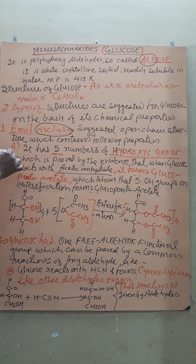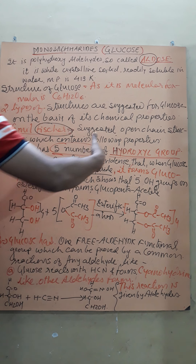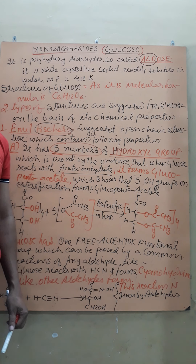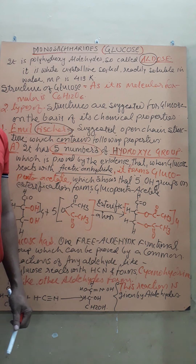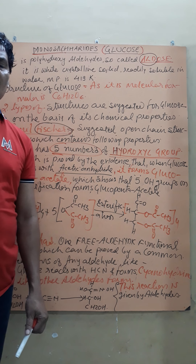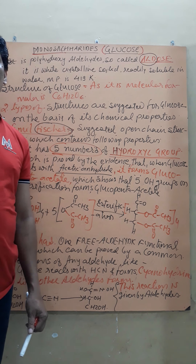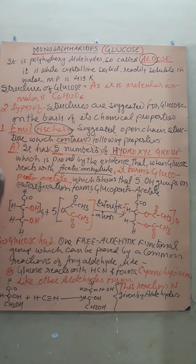The first property to prove is that glucose has five hydroxyl groups. If any compound has an OH functional group, it should give an esterification reaction, since alcohols undergo esterification. If glucose has five OH groups, then five esterification reactions should be possible with it.